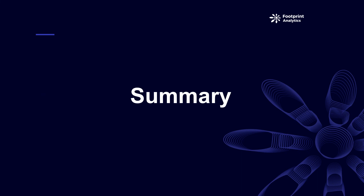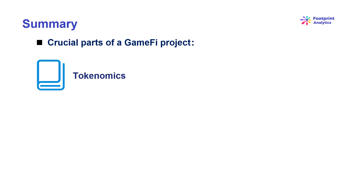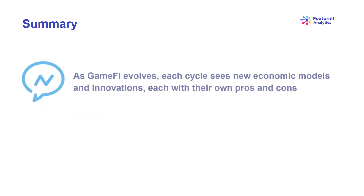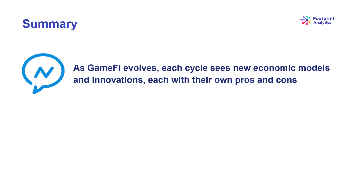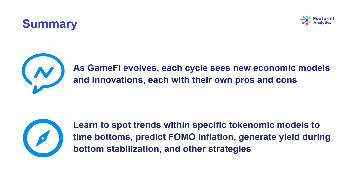The last part is a summary of dual tokens game fi tokenomics. Tokenomics are a crucial part of a game fi project, along with metrics like the number of new players, the number of active players, and the contrast between output and consumption. As game fi evolves, each cycle sees new economic models and innovations, each with their own pros and cons. Serious investors can also learn to spot trends within specific tokenomic models to time bottoms, predict FOMO inflation, generate yield during bottom stabilization, and other strategies.